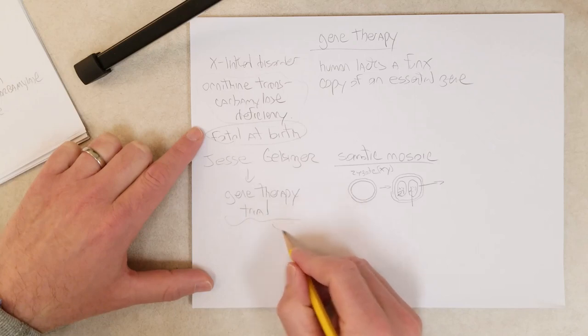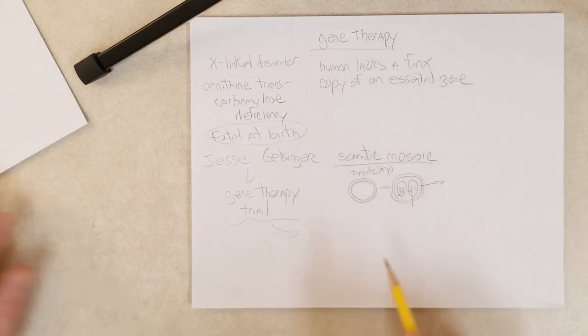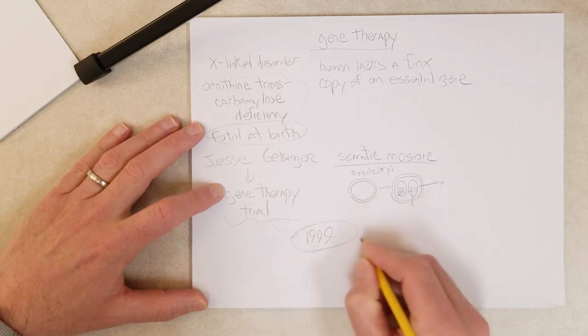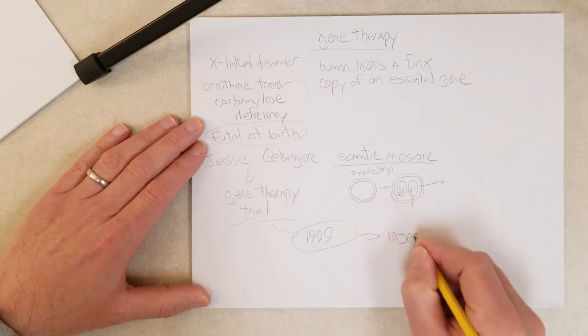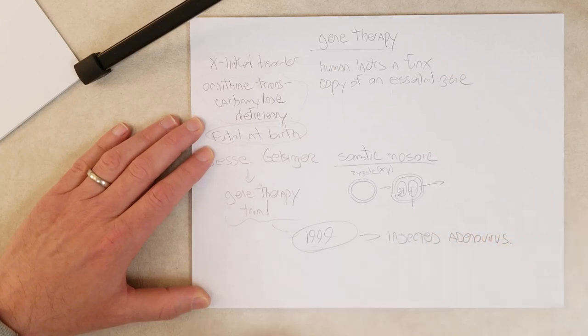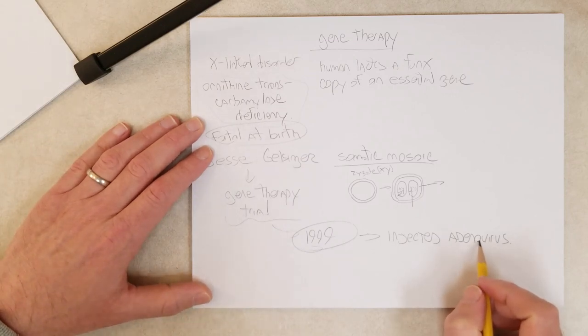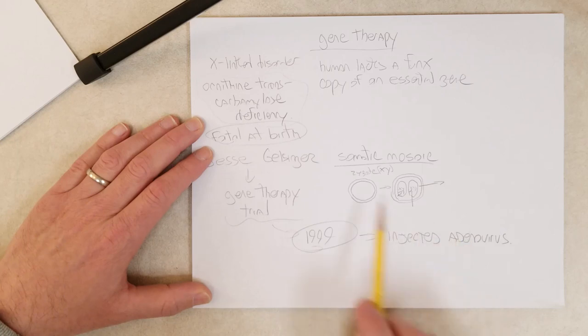But unfortunately, so how did this trial work? Essentially, this was in 1999. Doctors and researchers had injected a modified adenovirus. So the modified adenovirus lacked the genes necessary to cause infection. And in the place of those genes, the adenovirus had a copy of ornithine transcarbamylase. And the idea was the adenovirus would deliver this gene to most of or a good number of Jesse's cells.